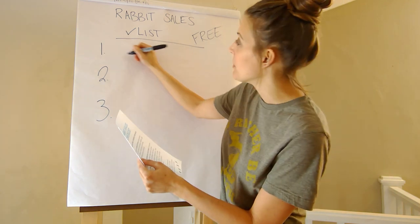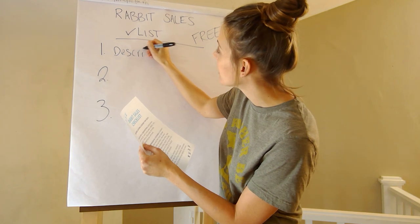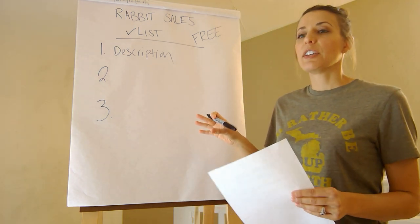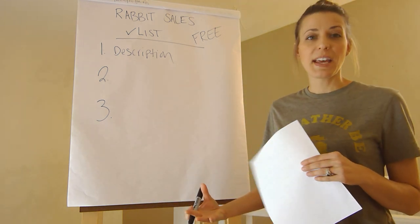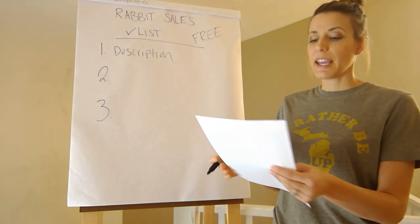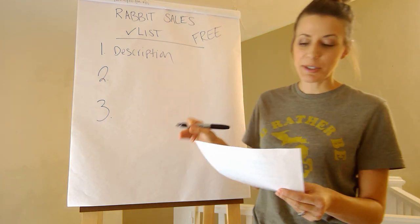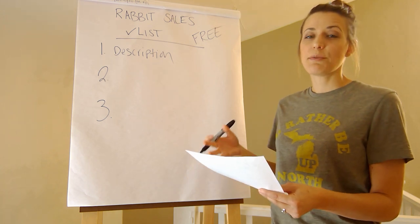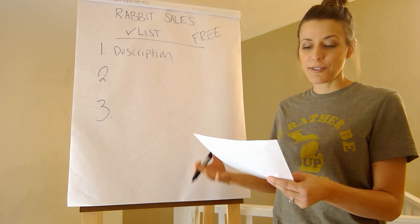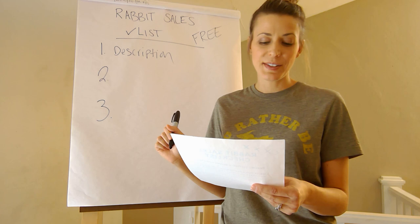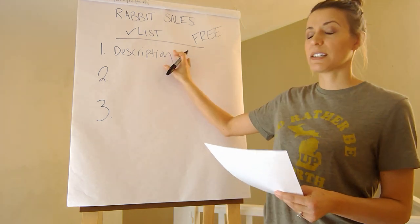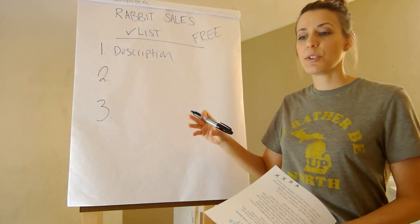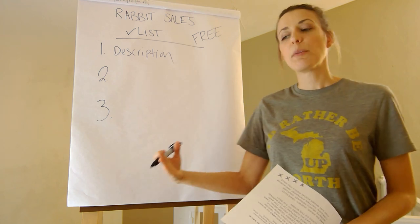The first part is the actual description, and you're going to want to physically write this out — type it out or write it by hand. You want to include certain information because people interested in rabbits have specific characteristics they're looking for. Examples of things to include: the birthday, the date available, the breed of rabbit if you know it, the sex, the quantity of rabbits, how many are male and female, the color of each, the price you're asking, pedigree options, and transportation options.